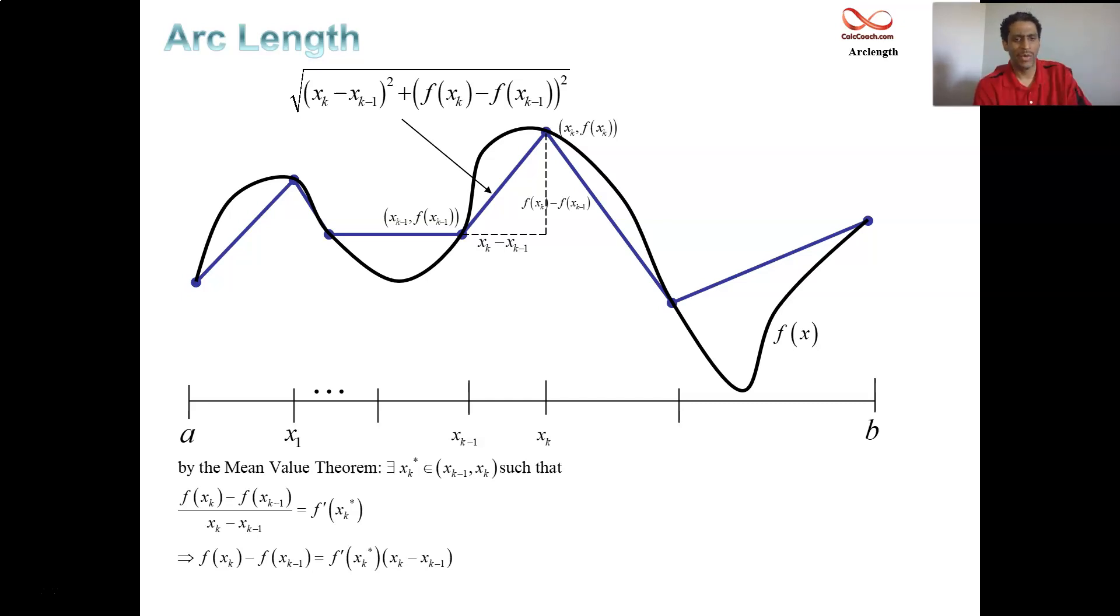And what we notice is that the difference between the f of xk and f of xk minus one can be rewritten then with this guy instead. So, we're going to replace the second guy here in parentheses. And for the mean value theorem, we find out that we can replace it by the derivative at xk star times the same xk minus xk minus one. The xk star is just some place in between that is guaranteed by the mean value theorem. So, that gets replaced.